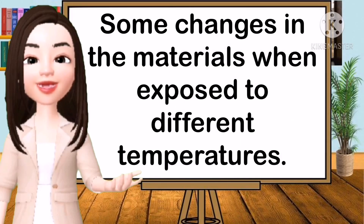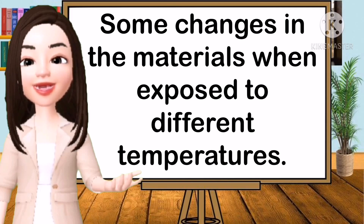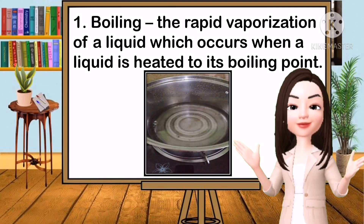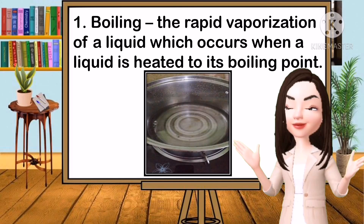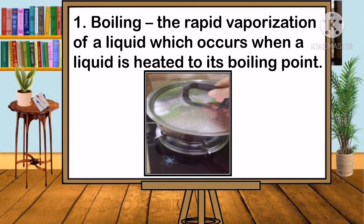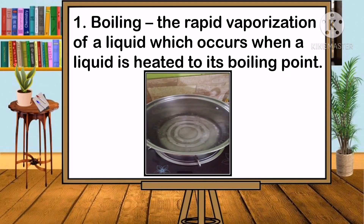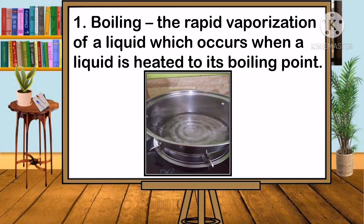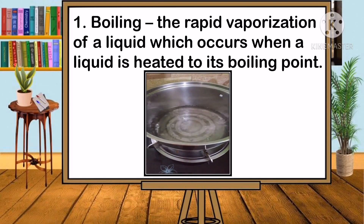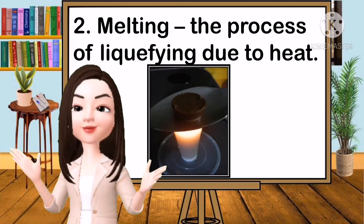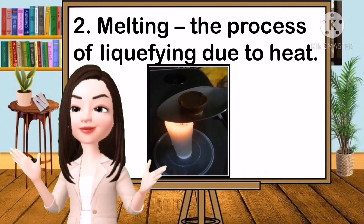Let's identify some changes in materials when exposed to different temperatures. Number one is boiling. Boiling is the rapid vaporization of a liquid, which occurs when a liquid is heated to its boiling point. Second is melting — it is the process of liquefying due to heat.